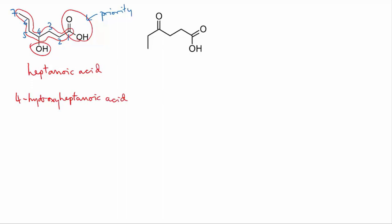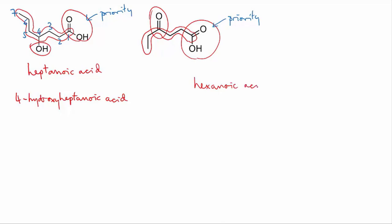The second one: the main chain here is six carbons long. The two functional groups are a ketone and a carboxylic acid. Again, the acid wins in terms of priority, so we have hexanoic acid. And our list tells us that when the ketone is not the priority group, it's known as 'oxo'. And here it is on the fourth carbon, so this molecule is 4-oxo-hexanoic acid.